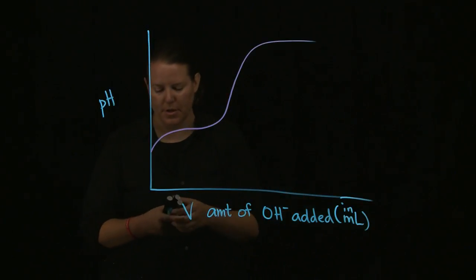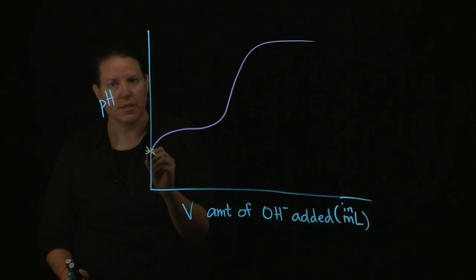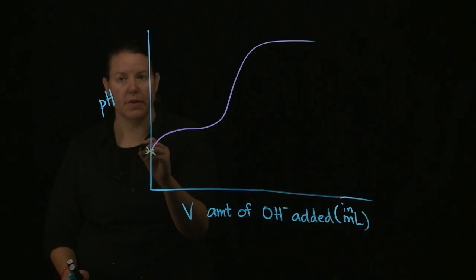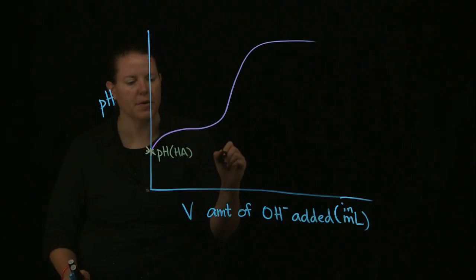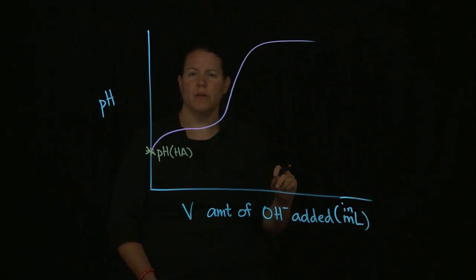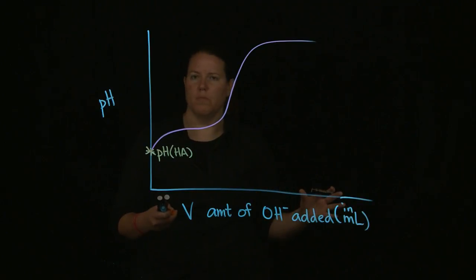So in terms of this, you have the starting pH. At the starting pH right here, this is the starting pH of the acid alone. So this is the pH of HA. And basically, what you're doing here is you're doing kind of an idea of HA being added to, or really, sorry, OH minus being added to HA to form water and A minus.